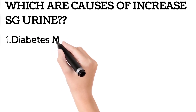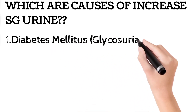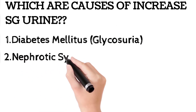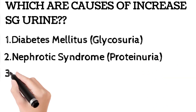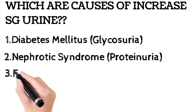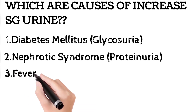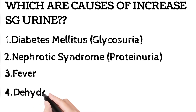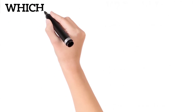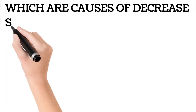The causes of increased specific gravity of urine are conditions where solute concentration increases. The first example is diabetes mellitus, in which you have glucose in the urine. The second important cause is nephrotic syndrome, in which you have proteinuria — presence of protein in the urine. The third cause is fever, which temporarily increases specific gravity. Finally, dehydration due to less water drinking also increases specific gravity.